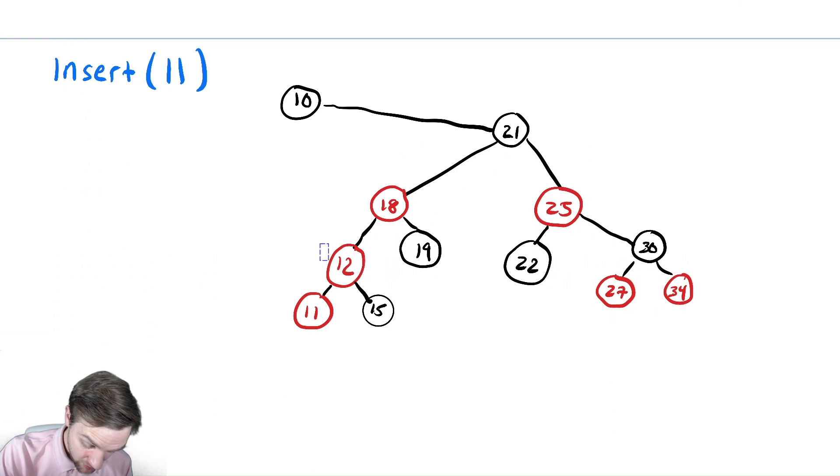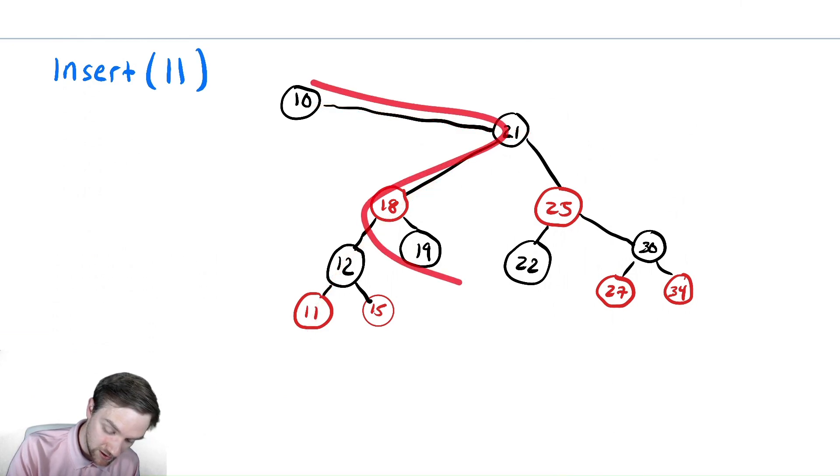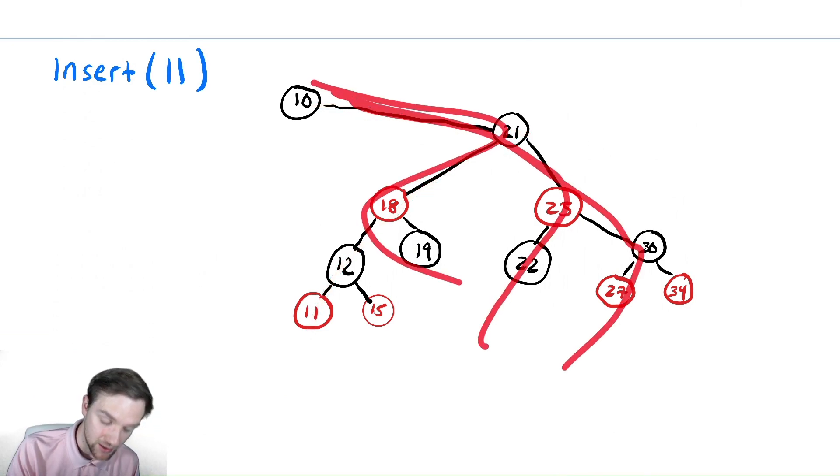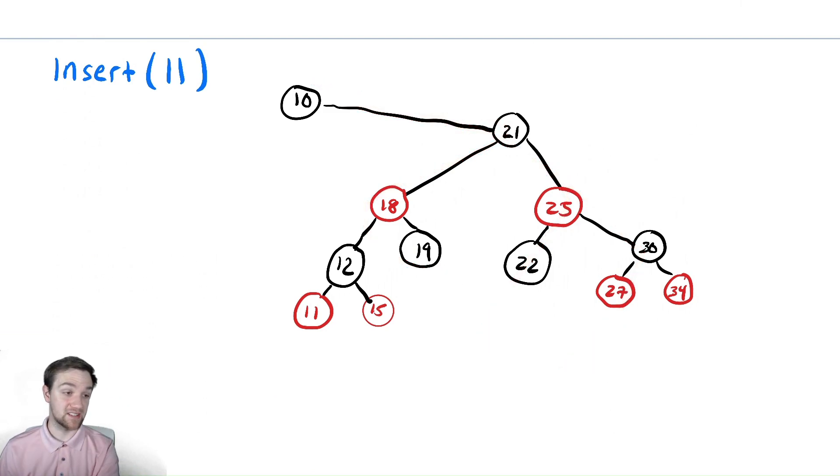Now let's do our recoloring. I need to recolor the parent to be black and both children to be red. Let's color this a little bit better. So now let's look at how we're doing. Have we broken it? Have we done anything? This now has one, two, three black nodes, three, three, three. So we've seemed to have fixed it in this case.